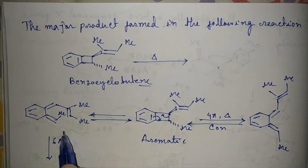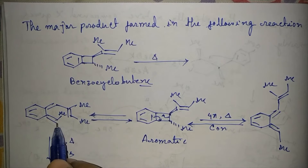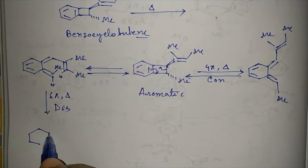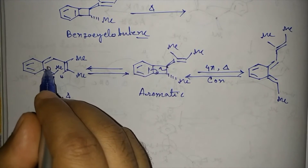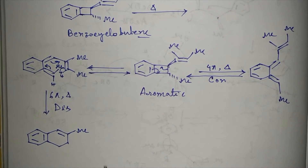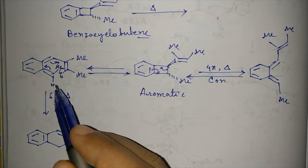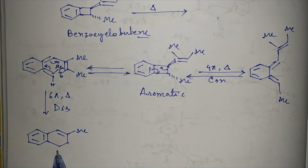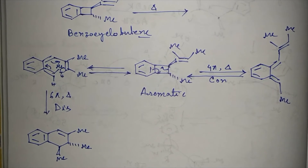A 6π electrocyclic ring closure reaction can occur under heating conditions. When we close the ring, it will regain aromaticity. Between the two methyl groups, one carbon rotates clockwise while the other rotates anticlockwise — disrotatory mode. If we rotate this methyl anticlockwise, it goes upward; if we rotate clockwise, it goes below the plane.